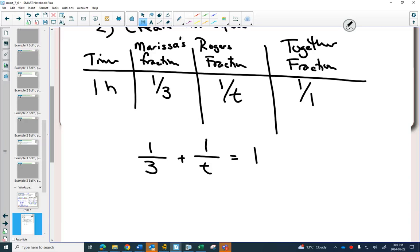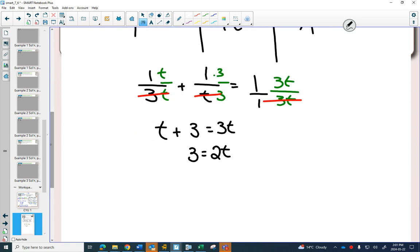I could use a common denominator. This one needs a T and a T. This one needs a three and a three. And this one needs a three T and a three T. Once my denominators are all the same, I can multiply by that. And I'm going to get T plus three is equal to three T. Combine my like terms. Subtract T on both sides. Divide by two.